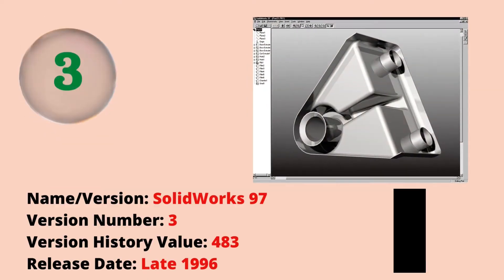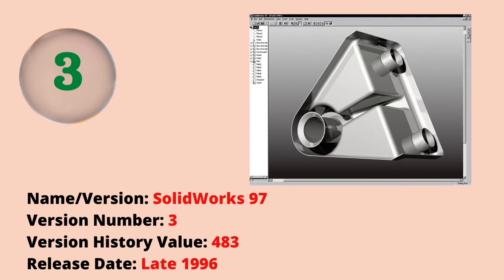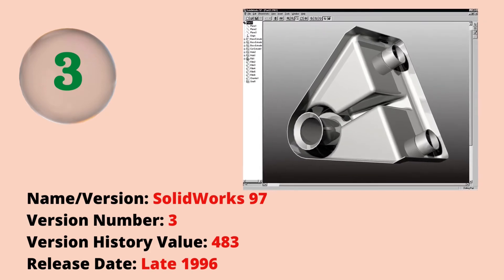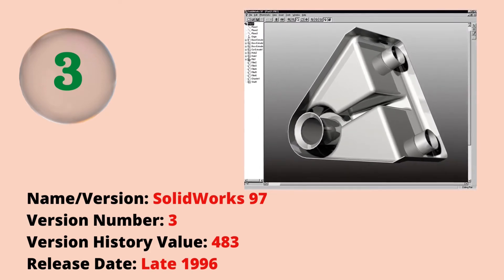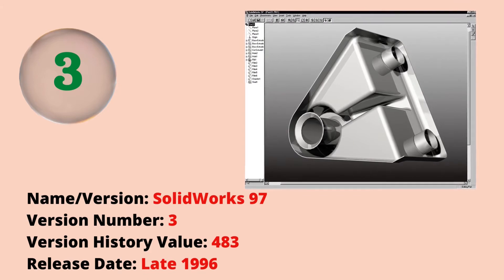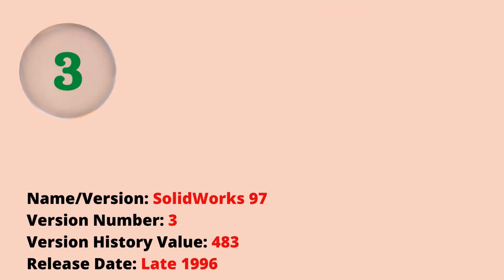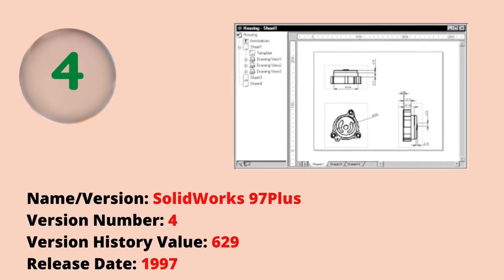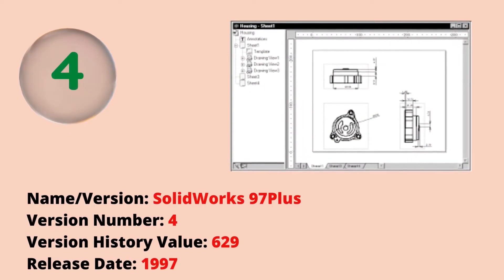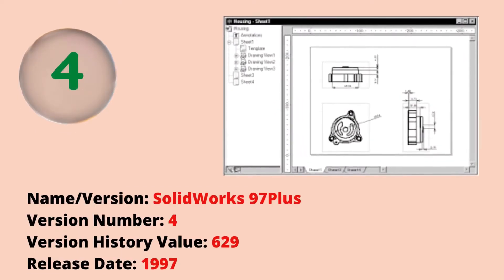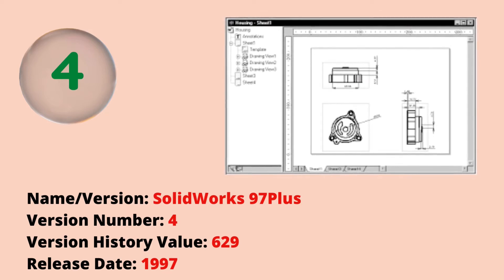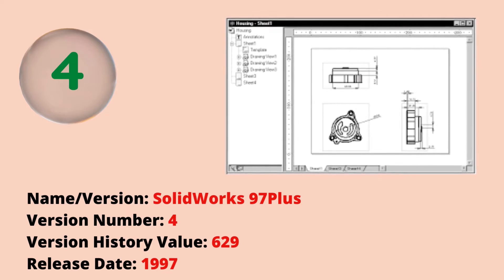The third version was SOLIDWORKS 97 with a version history value of 483. The release date was late 1996. The fourth version was SOLIDWORKS 97 Plus with a version history value of 629. The release date was 1997.